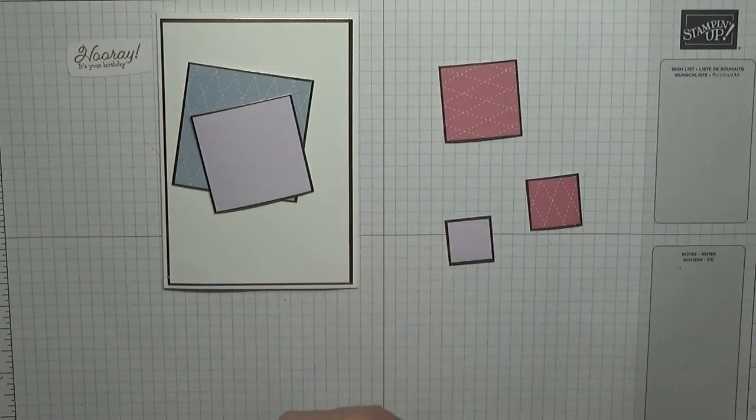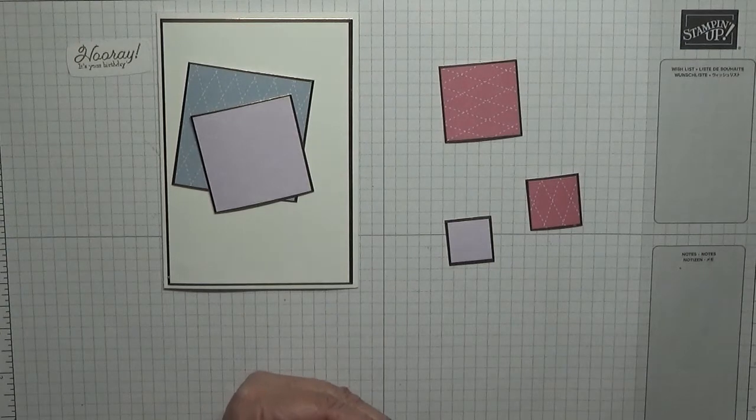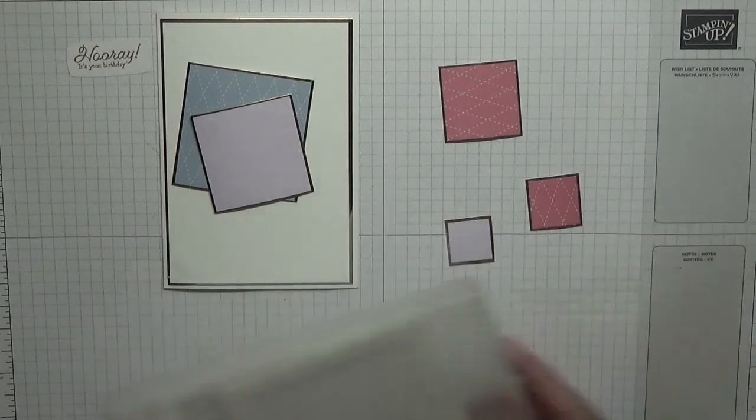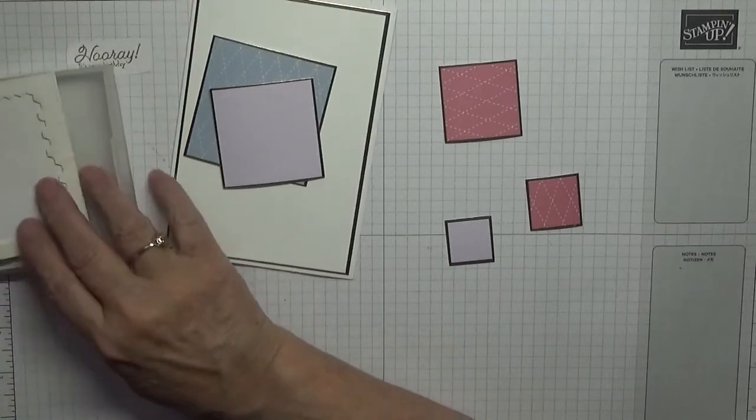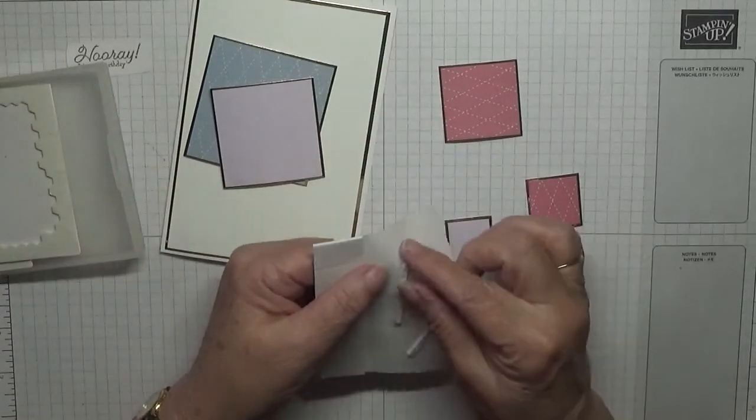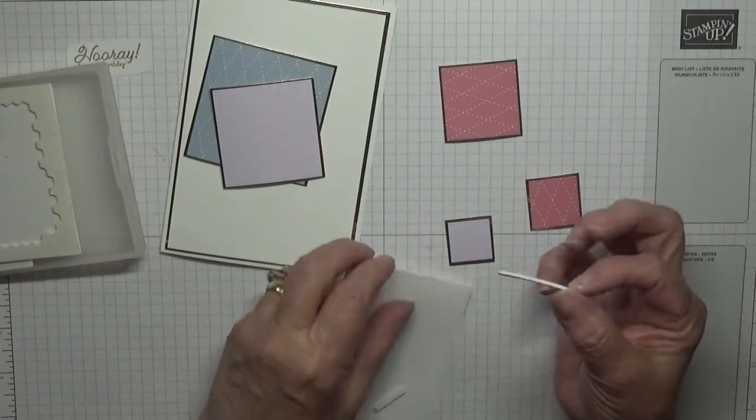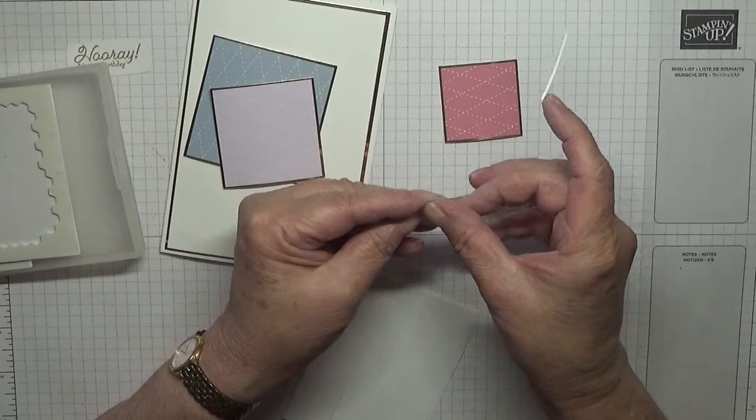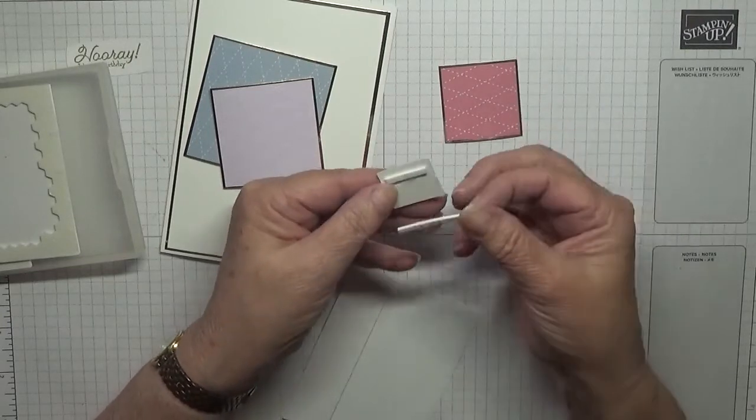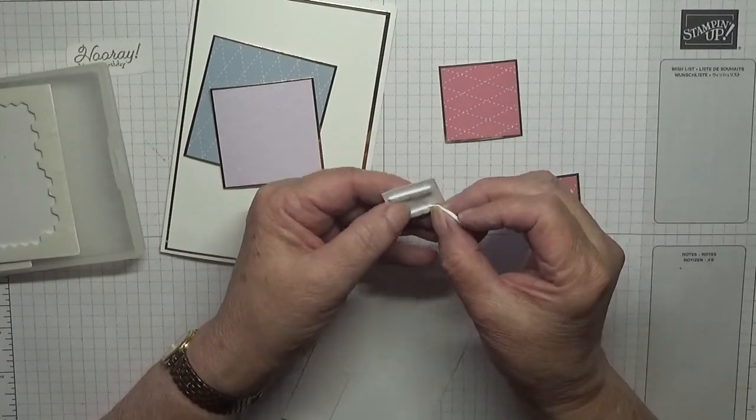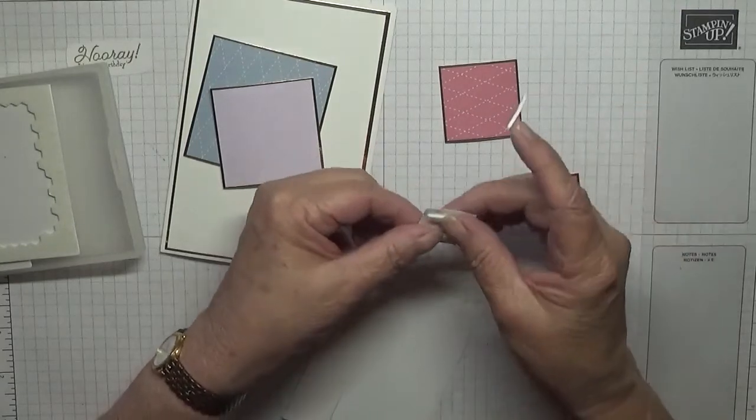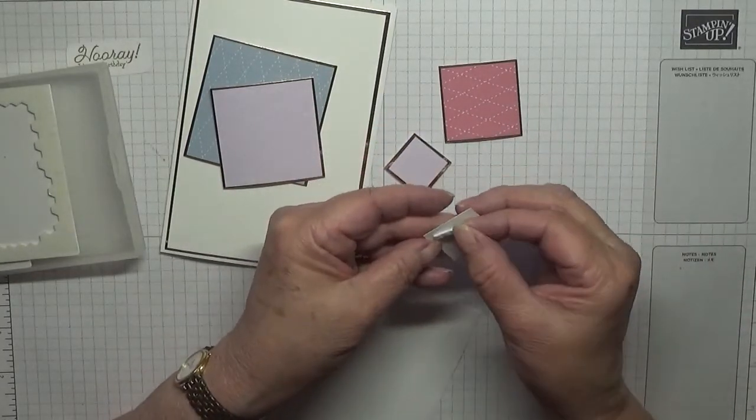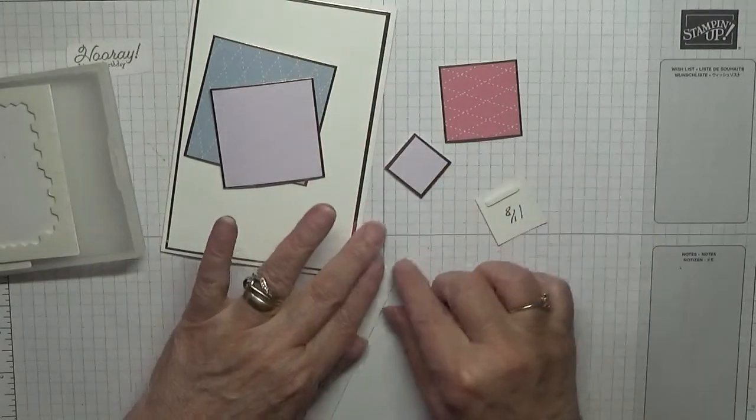Now we're going to use the dimensionals. I have got a load of thin strips here which I'm going to use. I actually got these off Amazon. You get 500 strips for about five pounds ninety-nine, which I thought was a bargain.